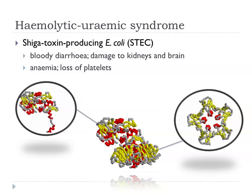Haemolytic uraemic syndrome is probably one of the worst complications of E. coli infection. Shiga toxin-producing E. coli give rise to this syndrome. It causes bloody diarrhoea, but also damage to the kidneys and to the brain. It causes anaemia and loss of platelets through the action of this toxin, which has two components: the active part of the enzyme and an elaborate binding component that allows it to bind to cells.